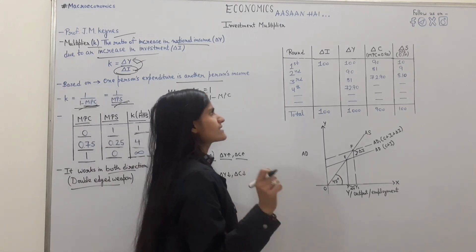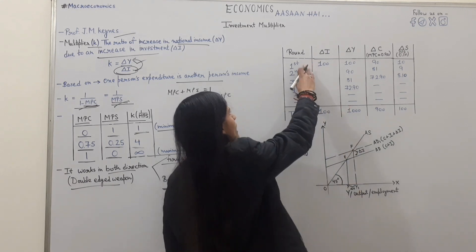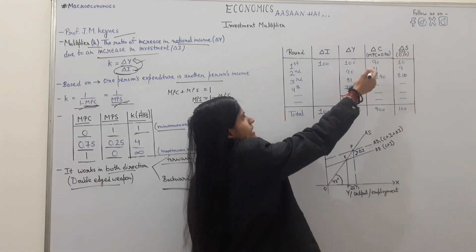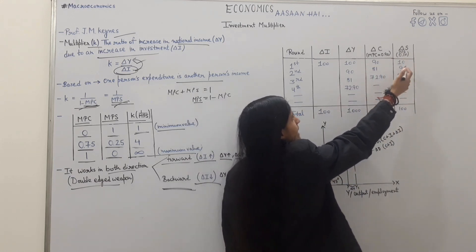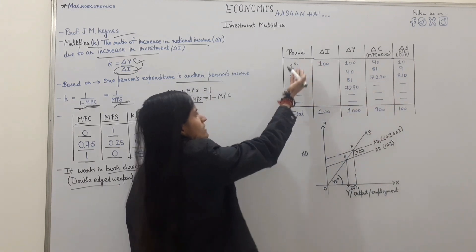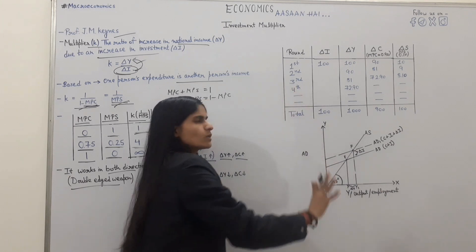In the table, you will understand which investment is multiplied in the economy. What is the round? Change in investment, change in income, change in consumption, change in saving. MPC is 0.90, then MPS is 0.10. Round, near end, first, second, third, fourth, all rounds, then total.